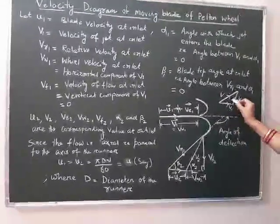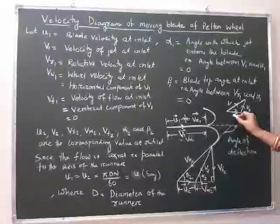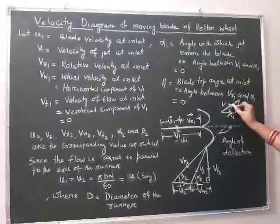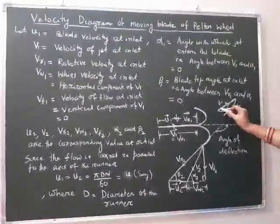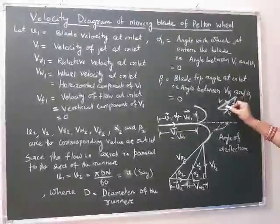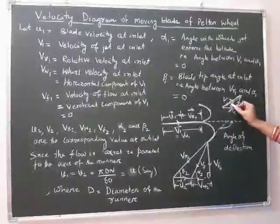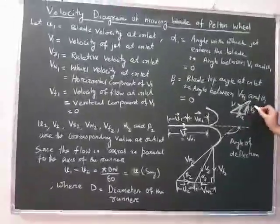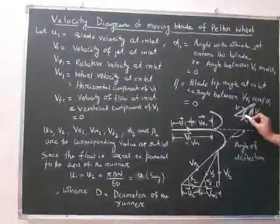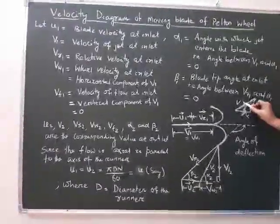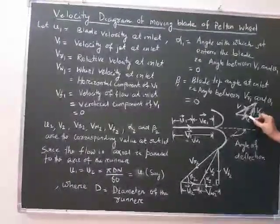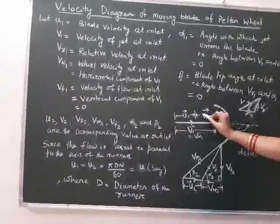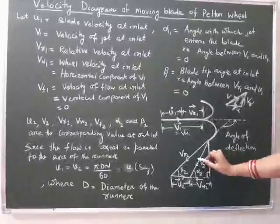Suppose u is one component of velocity and v is another velocity. As it is a vector quantity, it has both magnitude and direction. So this is the magnitude and direction of v, and this is the magnitude and direction of u. The third side of the triangle is nothing but the relative velocity, or the vector difference of v and u. Similarly, in this case, we will see how to calculate this relative velocity at inlet and at exit.